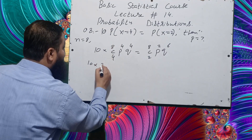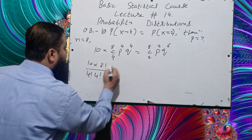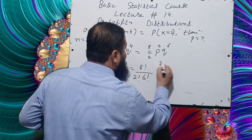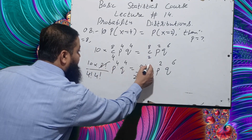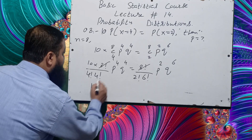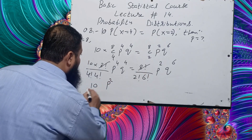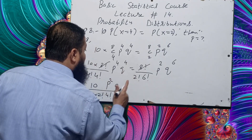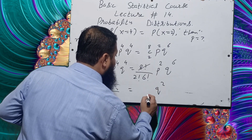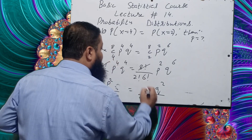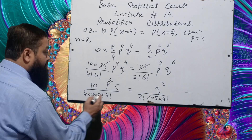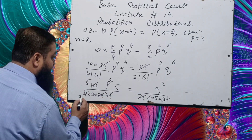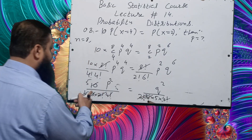The 8 factorials cancel. We get 10 × P^4 / (4 × 3 × 2!) × Q^4 on the left, and P^2 × Q^6 / (2! × 6 × 5 × 4!) on the right. Cancelling 4! with 4! and 2! with 2!, and simplifying: 2×2=4, 2×5=10, 2×3=6. After cancellation, we get 25P² = Q².